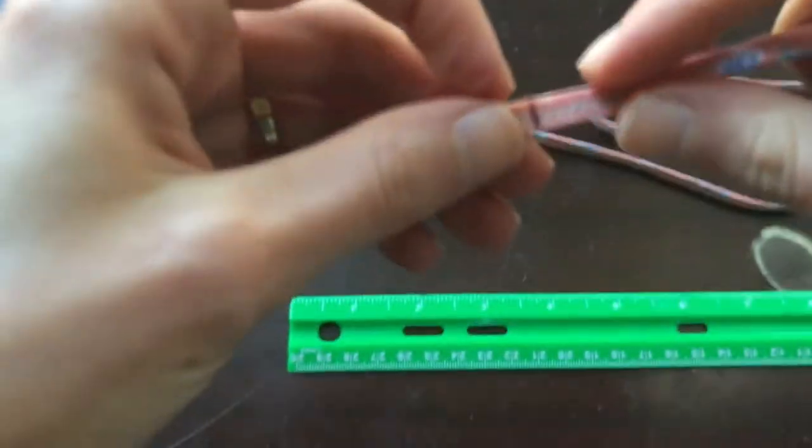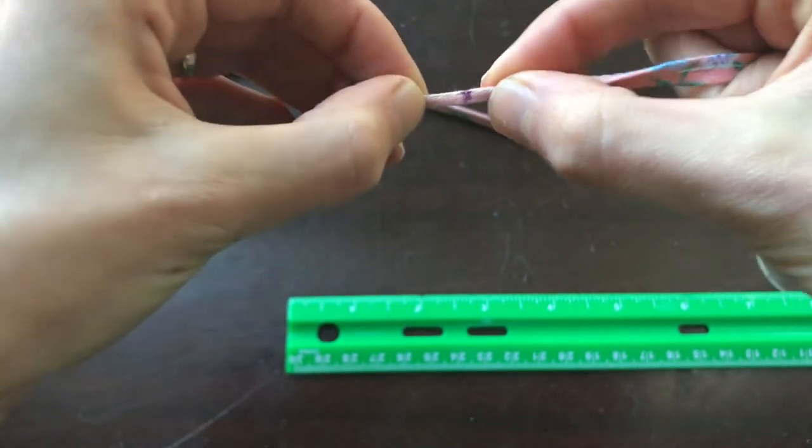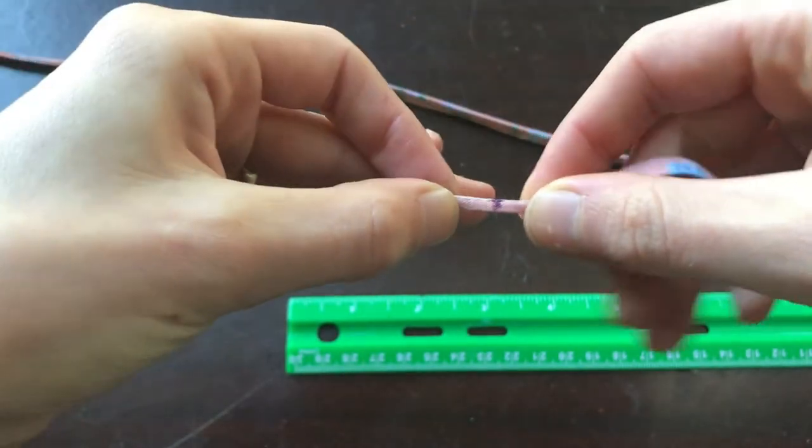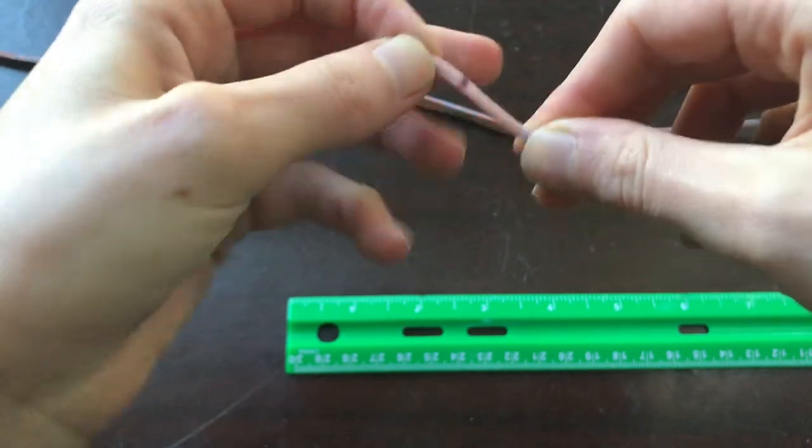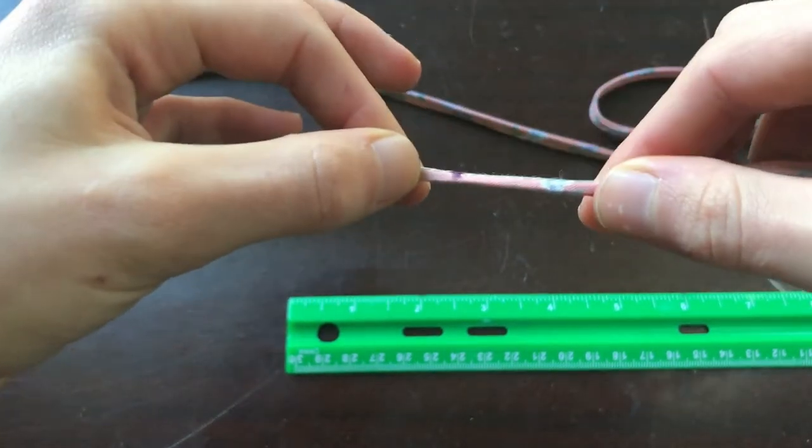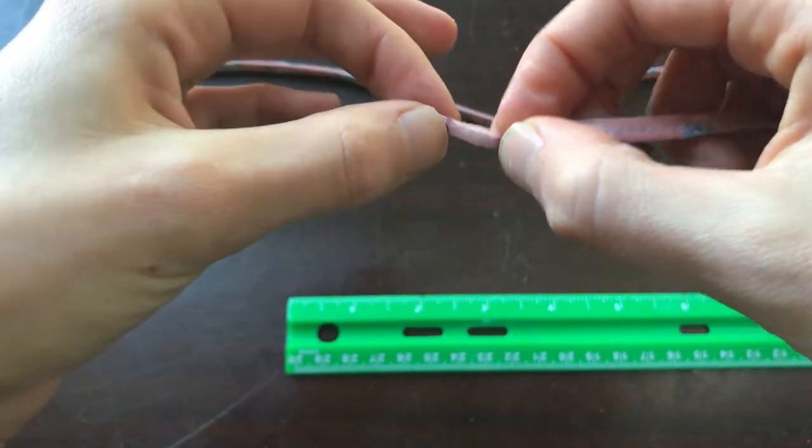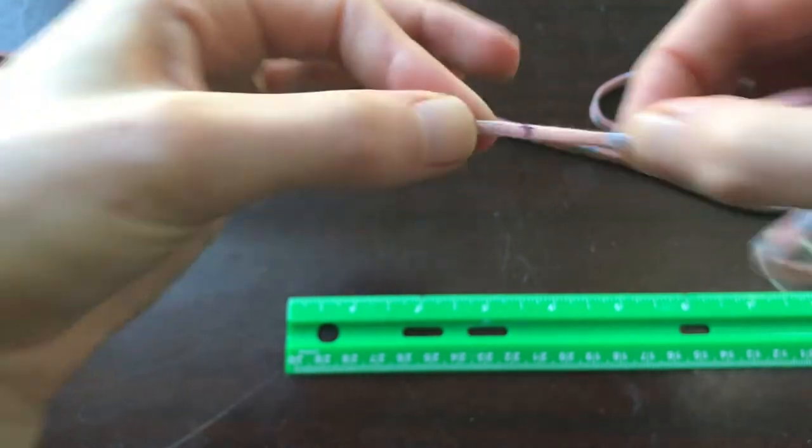So next you're going to fold the end of your shoelace in half and take this to your ironing board and give this a good press and you want to make sure that you're ironing about two inches or so. It'll just make it easier to do the next step. So I'm going to take this to my iron.